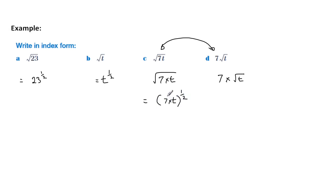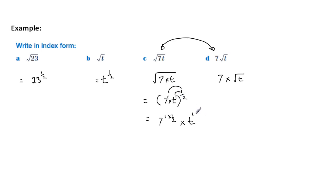The rule is that there's a power of 1 on both the 7 and t. We multiply both of these by a half and we get 7 to the 1 times the half, and then t, which is to the 1, times a half as well. So when we simplify this down, we get 7 to the half times t to the half.